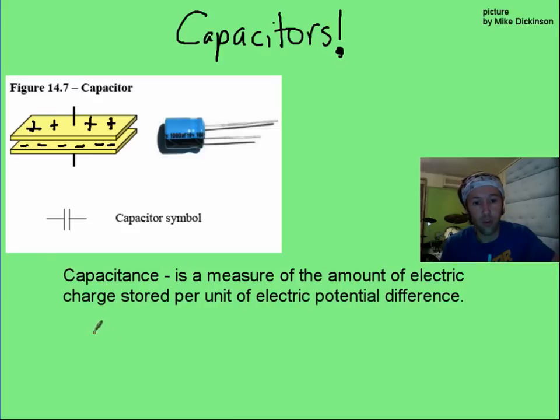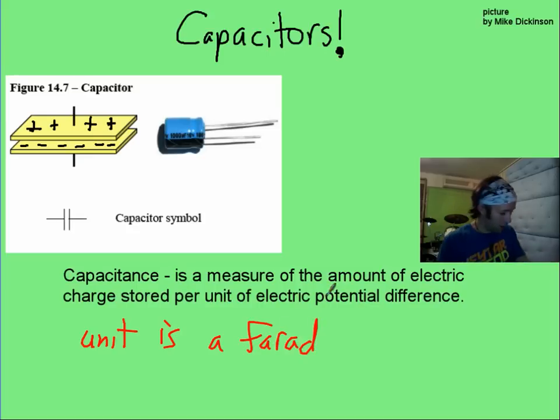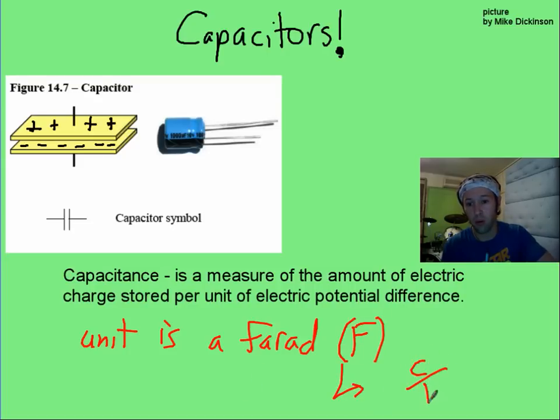The unit for this is a farad, and the abbreviation for a farad is a capital F. And this does break down into a coulomb per volt, how much charge you can store for every volt of potential difference. Now, you probably know that a coulomb of charge is a redonkulous amount. So one farad is big. So you're often going to be dealing in microfarads or nanofarads.